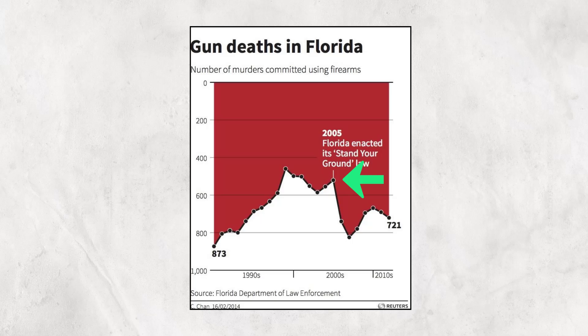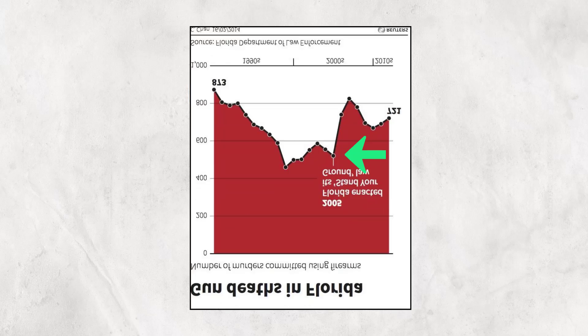In another example, Reuters seemingly showed that Florida's new Stand Your Ground law dramatically decreased the numbers of murders committed using guns. But if you look closely, you will actually see that the journalist inverted the y-axis, having zero at the top. If you flip the graph, it looks much more true to our normal way of reading graphs, and we can see that the result of the new gun law spiked the number of gun-related murders.